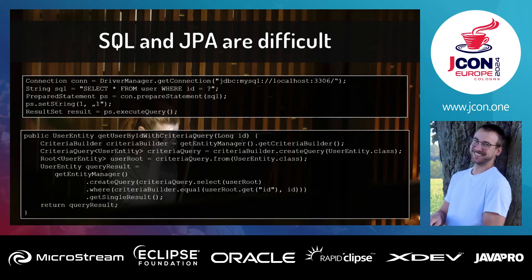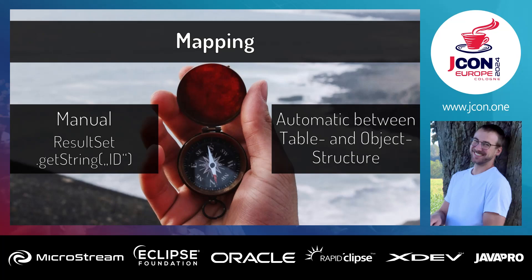In Java we use object graphs — we have objects with relationships, we don't have tables, at least not only tables. So you needed mapping, and you still need mapping. There are two choices: the manual formatting and parsing of SQL statements, which nobody really does, and automatic mapping between table and object structure, which is JPA, where JPA does the heavy lifting and you simply build the entities.